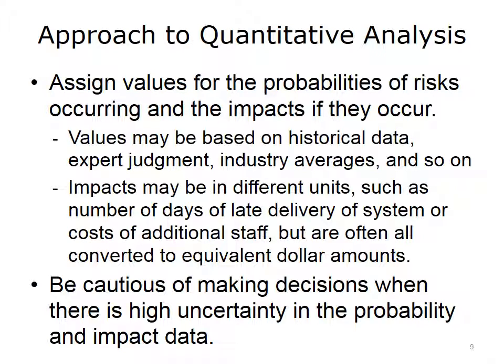Quantitative analysis of risks must be conducted carefully. Values for probability and impact of risks must be based on solid information. In some cases, you may have relevant historical data that can provide a good idea of the probability of occurrence. For example, if there is a history of power failures in your region and loss of power has been identified as a risk, you can uncover data to help assess the probability of that risk occurring in the future. In cases of the successful integration of a new technology, your values may be based on the considered judgment of experts. Be aware of your confidence level in the values you use, and be cautious of making important decisions about risk priorities when you lack confidence in the supporting data.